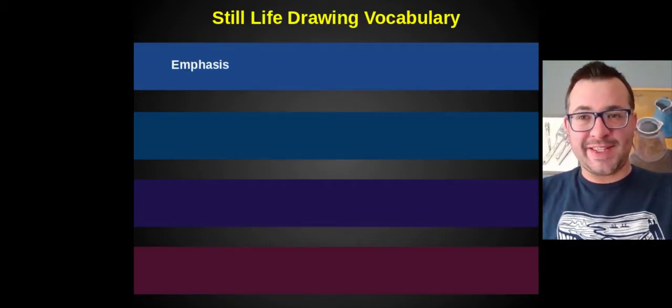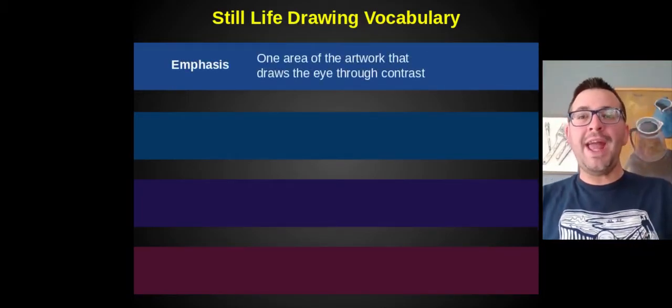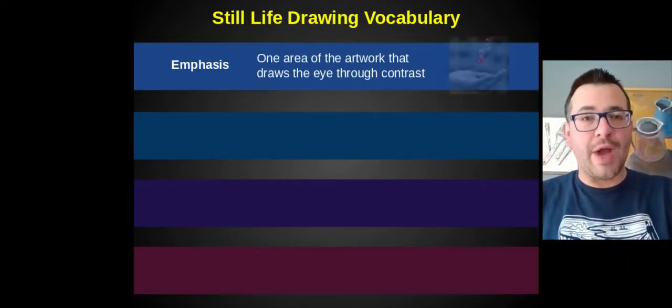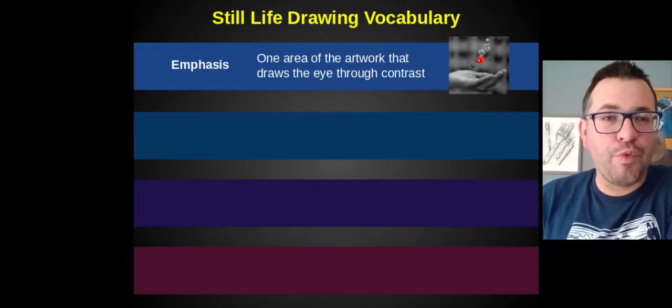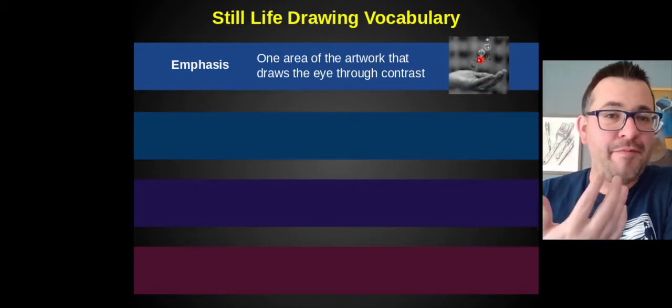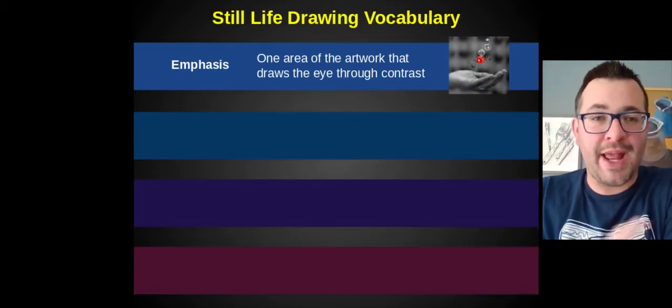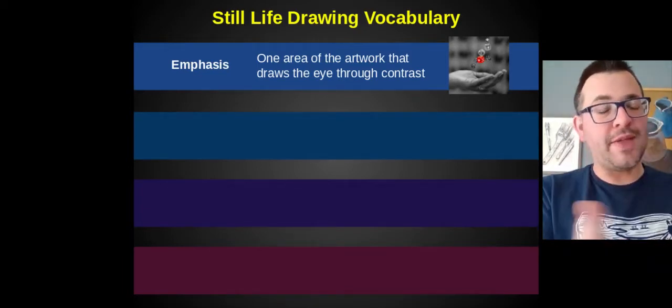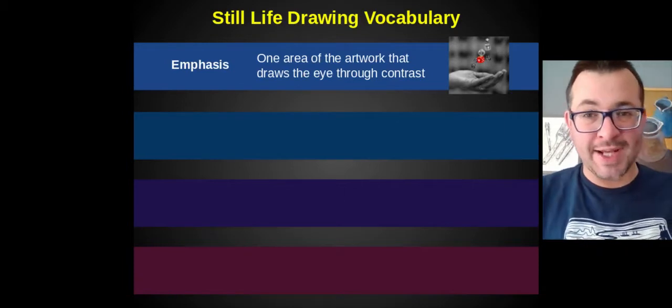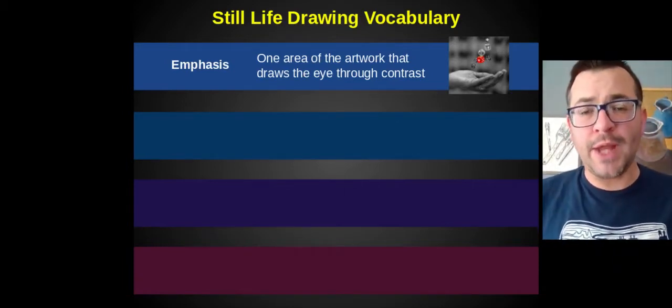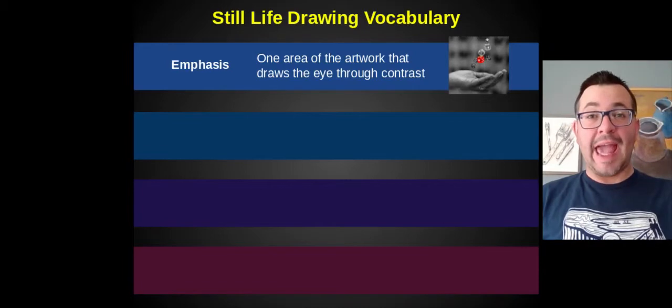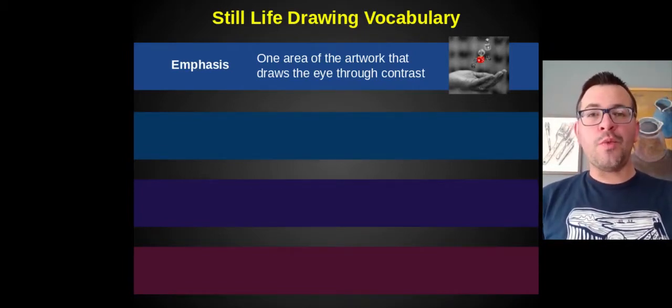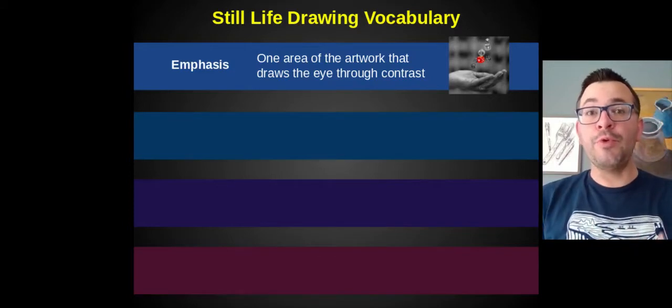They are emphasis. Emphasis is one area of the artwork that draws your eye through contrast. So in this photo example, the red dye is the emphasis. We're emphasizing that by making it different. Here the photo is black and white, and that one dye is in color. There are a lot of ways you can create emphasis, whether it's through scale, color, texture, but it's an area of the artwork that draws our eye through contrast.